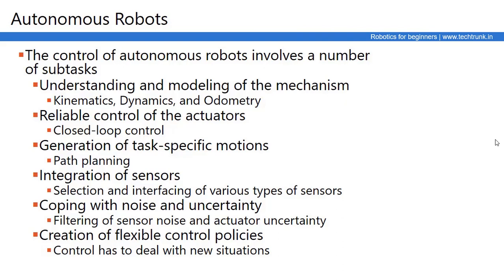The control of an autonomous robot involves several sub-tasks, including understanding and modeling of the mechanism such as kinematics, dynamics, and odometry of the robot. It also involves reliable control of actuators — for example, if a motor is asked to perform a precise 20-degree rotation and fails to do so, a closed-loop control system drives the motor to minimize the error between the desired and actual output. Closed-loop control, such as a servo motor, is used for precise and accurate actuator control.